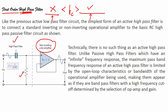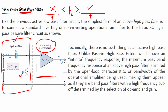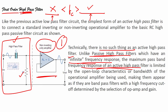We will see in the experiment section how to design the inverting amplifier, non-inverting amplifier, integrator, differentiator, and the role of ground and loading effect. Like the previous active low pass filter, the simplest form of an active high pass filter is to connect a standard inverting or non-inverting operational amplifier to a basic RC high pass passive filter. If the gain is 1 we use a unity gain amplifier; if a higher gain is needed we use an inverting or non-inverting amplifier. The maximum pass band frequency response of an active high pass filter is limited by the open loop characteristics or bandwidth of the op-amp being used.